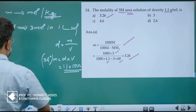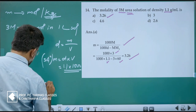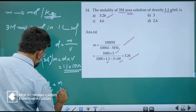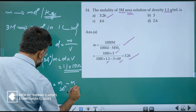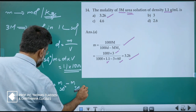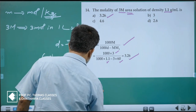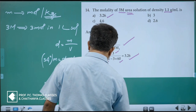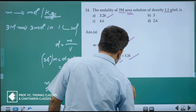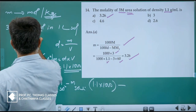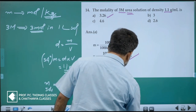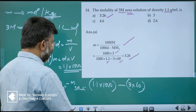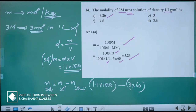We want mass of solvent. Mass of solvent equals mass of solution minus mass of solute. Mass of solution is 1.1 into 1000. Mass of solute is 3 moles into molar mass, which is 3 into 60. So mass of solvent equals (1.1 × 1000) minus (3 × 60).